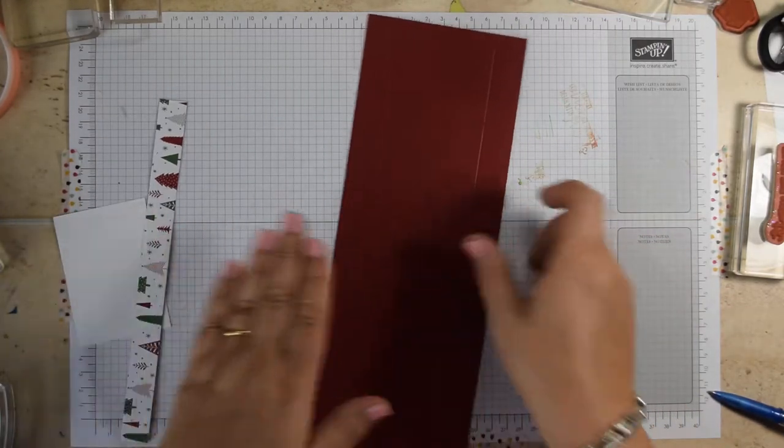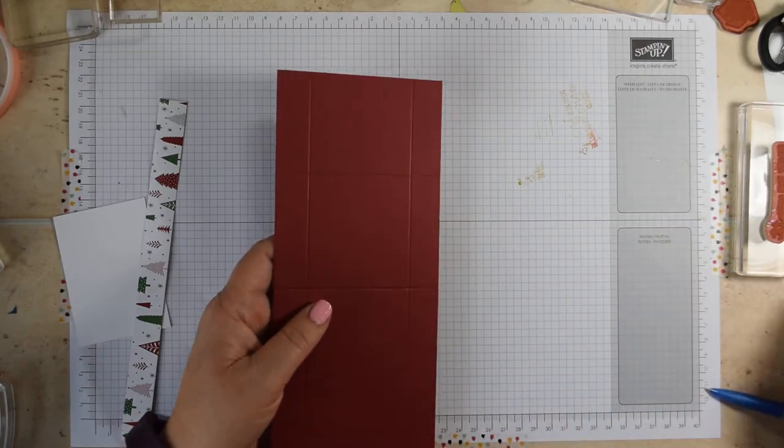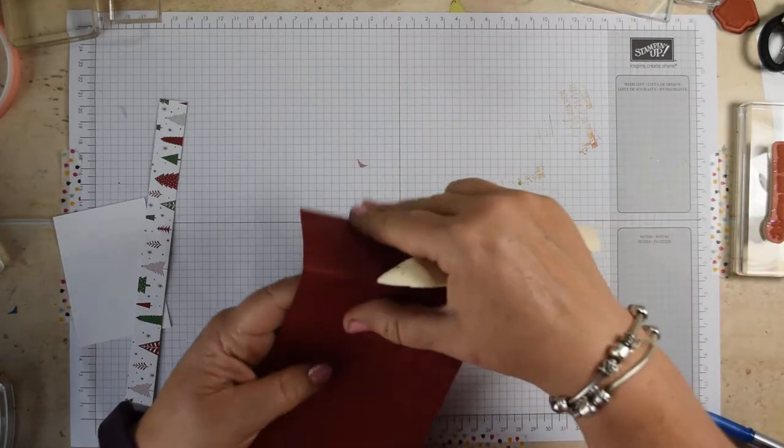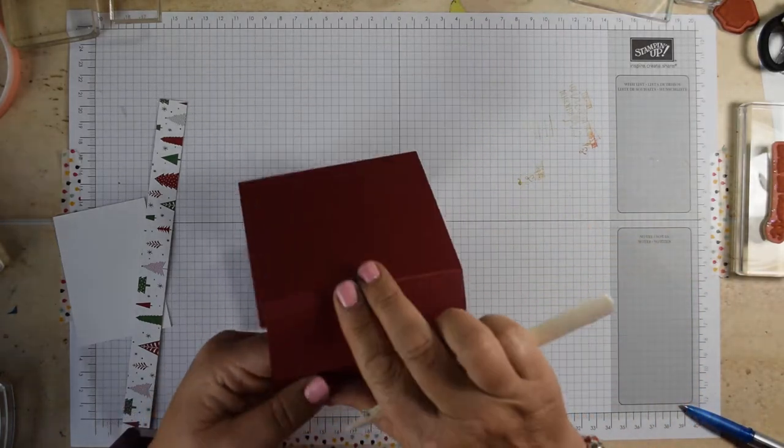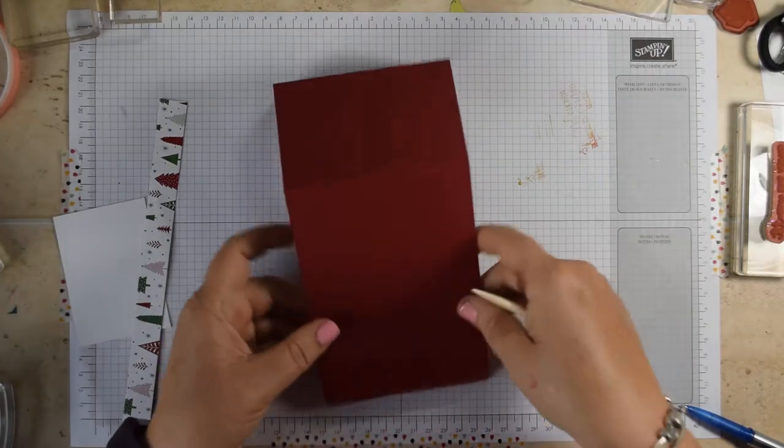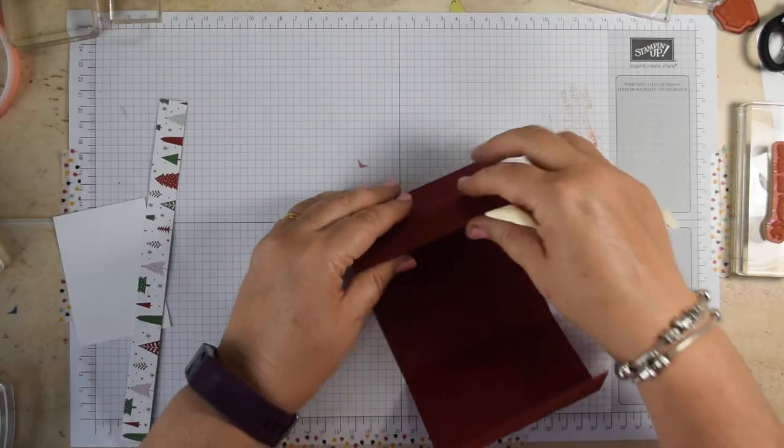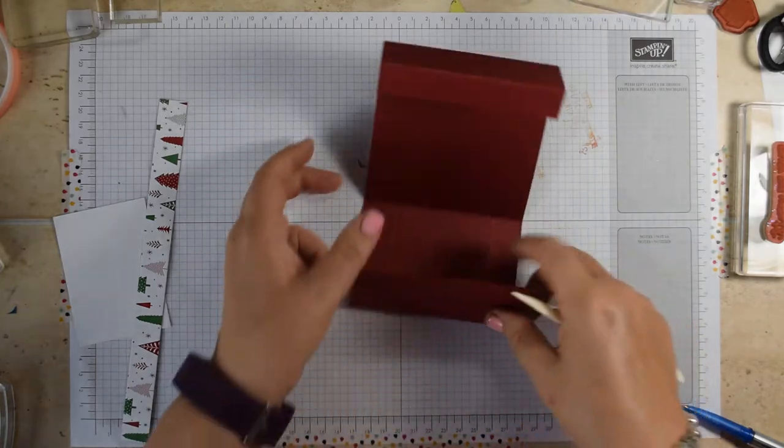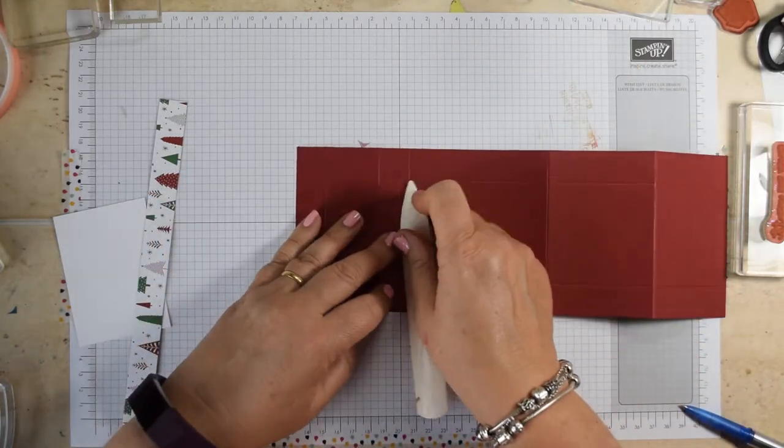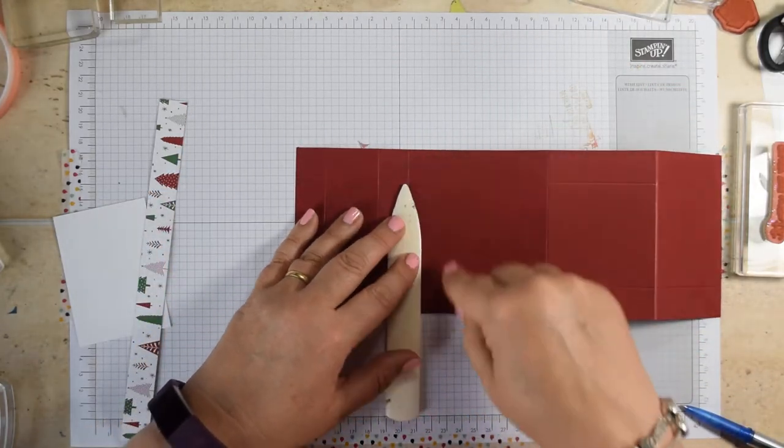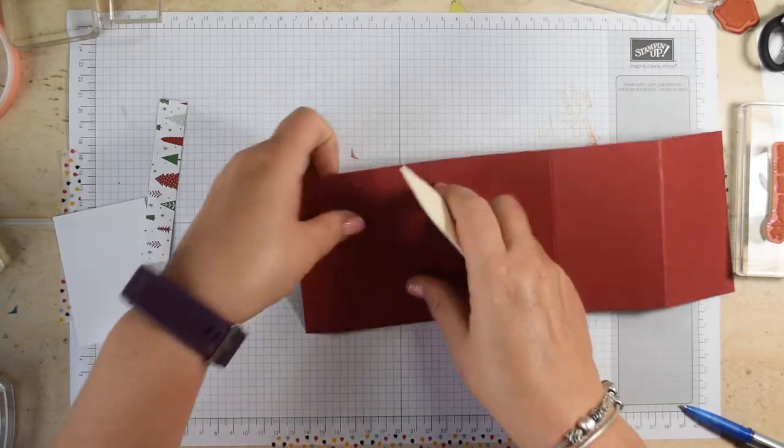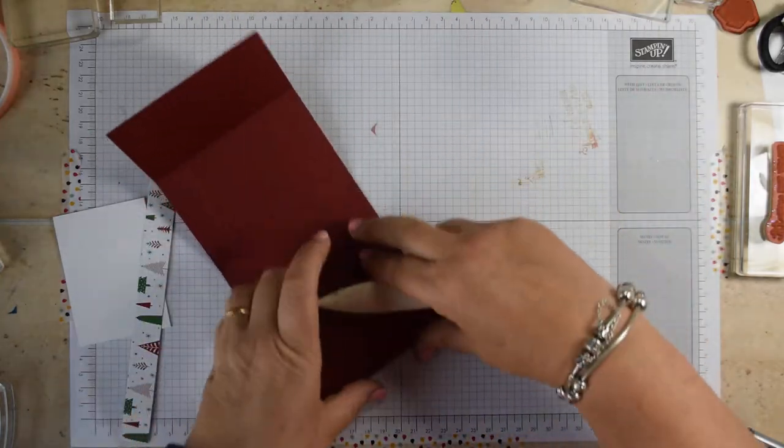So with our piece of cardstock then the first thing we're going to do is no surprise, we're going to fold and burnish those score lines. Fold and burnish all of those. So this one where I scored all the way, just pretend I didn't and I scored just the top and just the bottom. So you're not going to burnish that one.